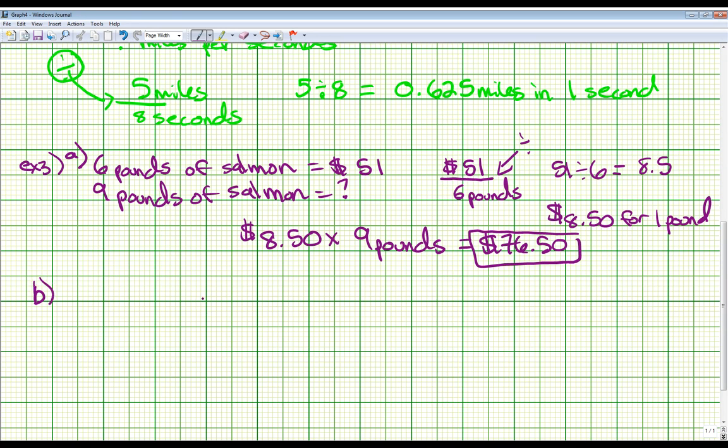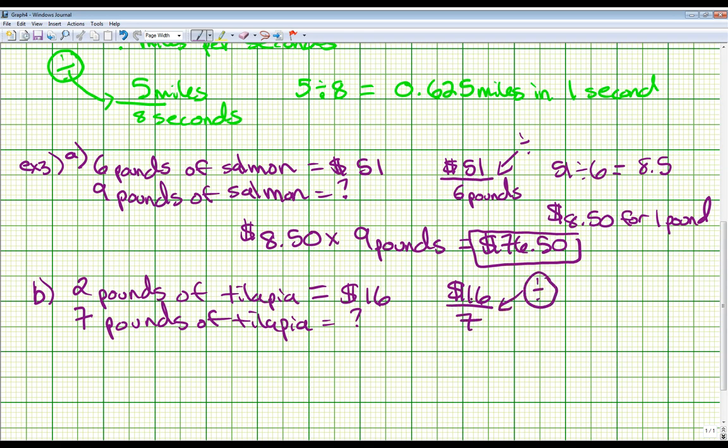Question B says, well, now you buy two pounds of tilapia fillets for $16. What's the cost for seven pounds of tilapia fillets? This is a very similar question. So this time we have two pounds, and this is just a different kind of fish. Tilapia fillets is going to cost $16, and these numbers are a little easier to work with. We want to know how much seven pounds cost. So let's set it up the same way. Let's put our dollars on the top. So let's do $16 over seven pounds. Again, remember that line means divide. So 16 divided by seven on our calculator. Oh, pardon me. I am doing this wrong. It's $16 for every two pounds. Good grief.